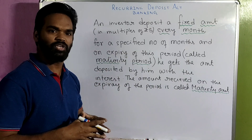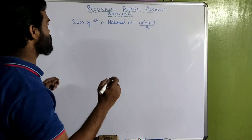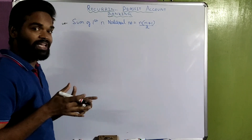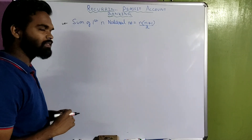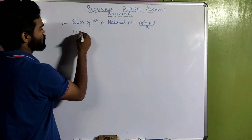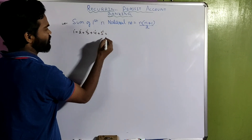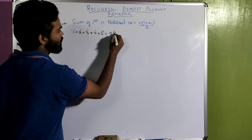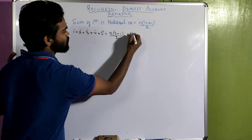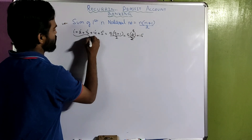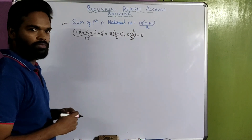Before we calculate interest, we should know that the sum of the first n natural numbers equals n(n+1)/2. For example, 1+2+3+4+5: here n is 5, so 5×6/2 = 15. And for ten terms: 10×11/2 = 55. This formula will be used in our derivation.